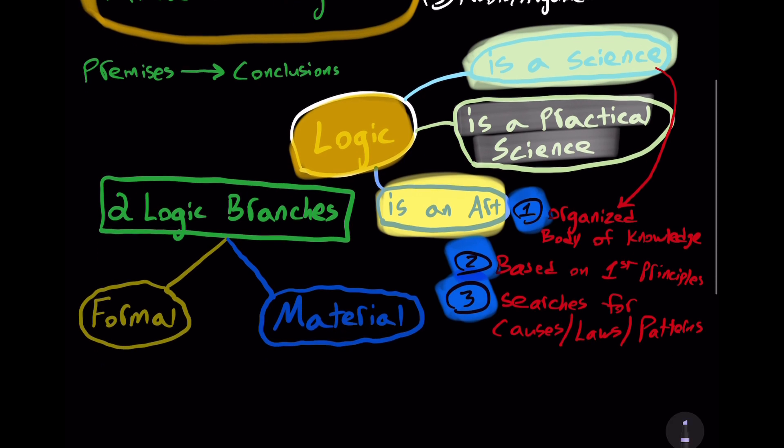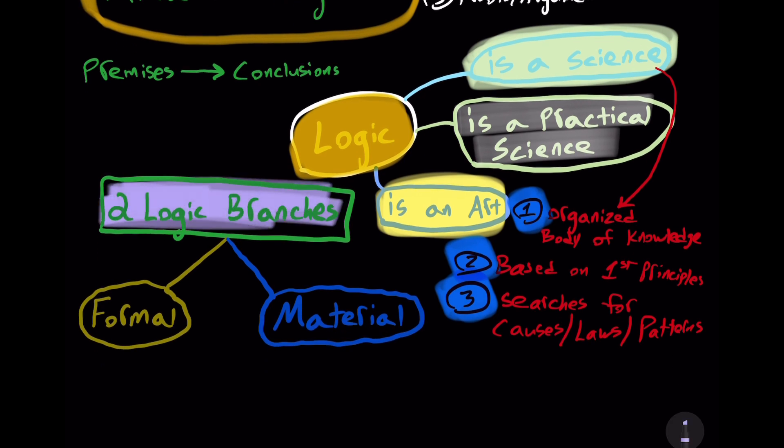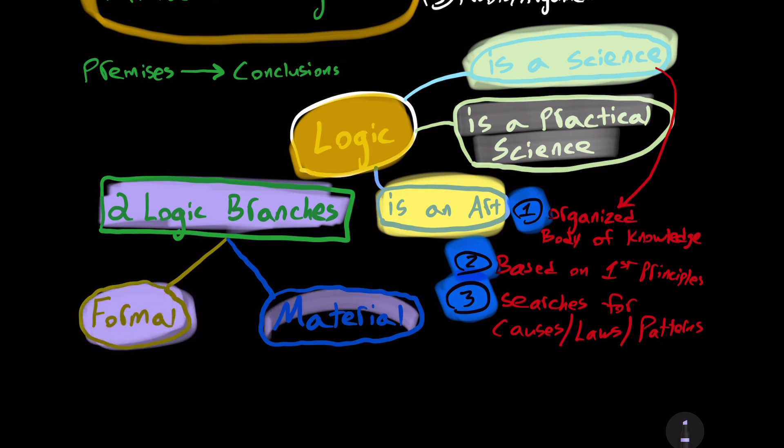Now, logic has two branches. A formal branch and a material branch. Formal logic is about form, about structures or patterns of valid arguments.